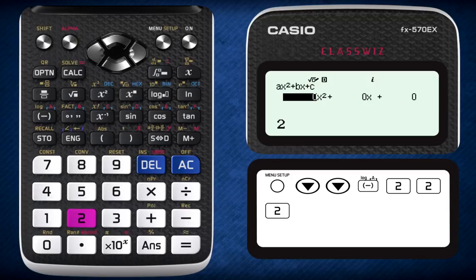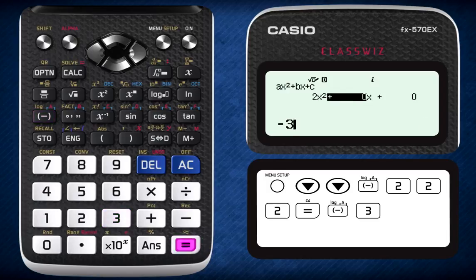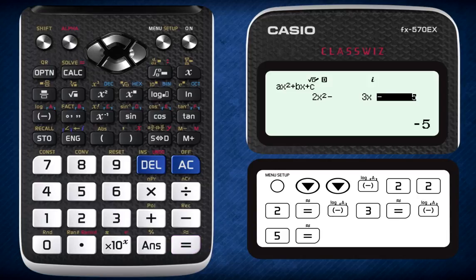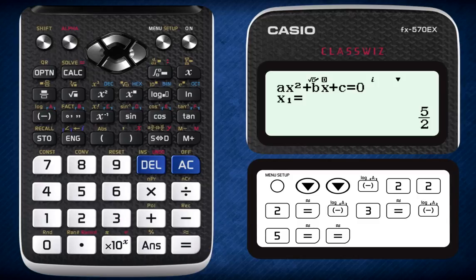Enter the values of 2 as the coefficient of x squared, negative 3 as the coefficient of x, and negative 5 as the constant. After keying in these values, pressing equal once gives you the first solution of t equals to 5 over 2. Pressing equal again gives you the second solution, which, as you already know, is invalid.